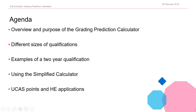In the webinar we will be looking at an overview and the purpose of the grading prediction calculator, an explanation of how to use the calculator for the 120, 360, 450, and 540 guided learning hours sizes of qualifications. We'll be showing examples of how to predict the second year of a two-year qualification using the learner's marks from year one. Rhys will demonstrate different scenarios and the simplified calculator, and we'll complete with how to use the calculator for predicting UCAS points for university offers.